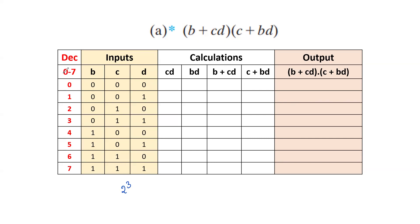Now let us write the binary combinations for the input variables. With three input variables, we can write 2 power 3 combinations of binary — that is 8 combinations, from 0 to 7. We should take the binary weights 2 power 0, 2 power 1, 2 power 2. Based on these binary weights, we fill the binary values. For the first value 0, the binary combination is 0, 0, 0. To get the value 1, we place 1 in the 2 power 0 position, with the remaining positions filled with 0s. In this way, we write all combinations up to 1, 1, 1.